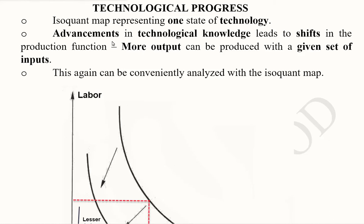In this video, we will see how technological progress can affect the isoquant map, that is the production function.